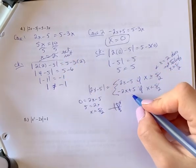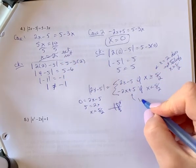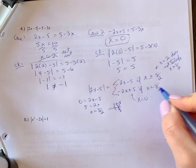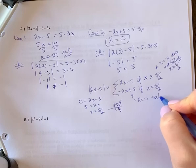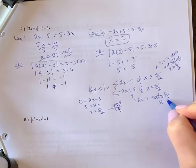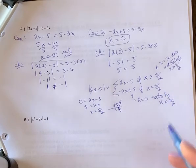Now, if we check here, for x equals 0, is 0 less than 2 and a half? Yes, it is. So it does satisfy x is less than 5 over 2.